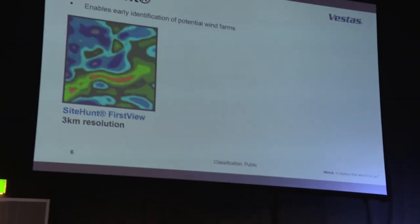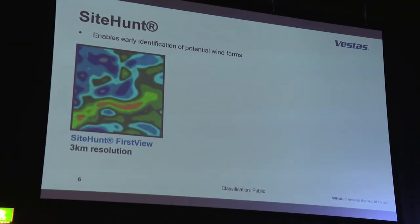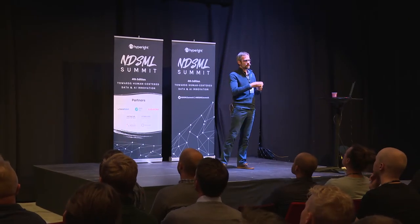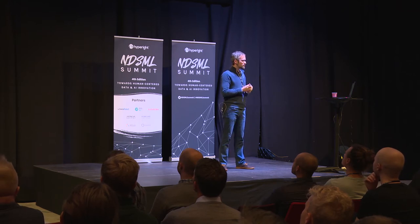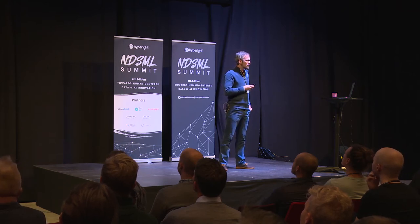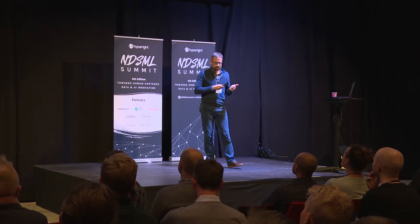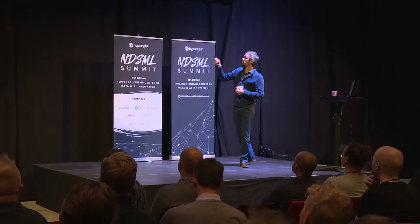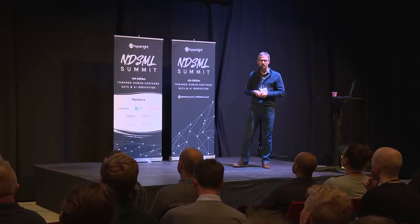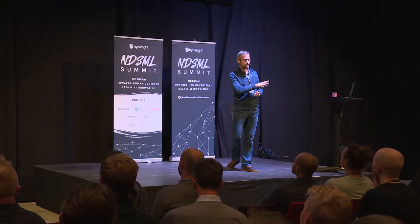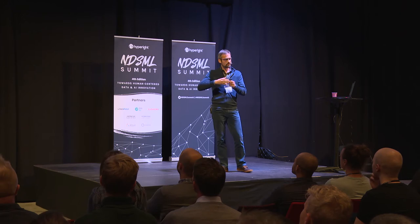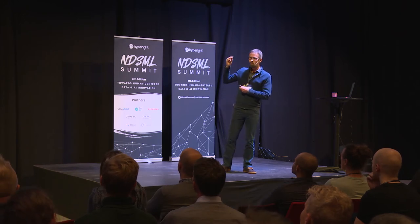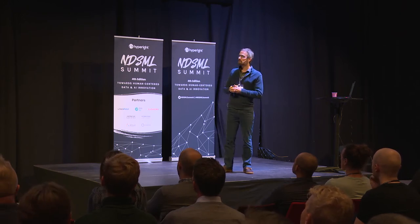In order to prepare for that, we have a tool in Vestas called Sighthunt. Sighthunt is used for figuring out where to put up the turbines and where to put up the weather masts — the met masts. In Sighthunt, we have pre-computed three-kilometer resolution for the entire globe. It's very quick to see aggregate data for many years — where are the good sites, where are the high wind speeds on average.